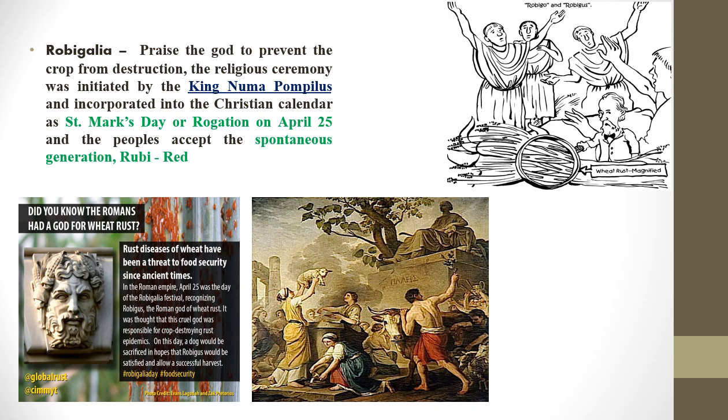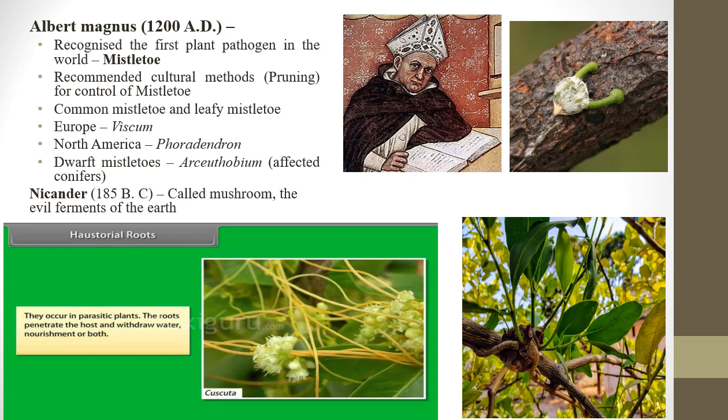Romans used to sacrifice animals like oxen, foxes, and goats during Robigalia to ward off rust disease. People in those times strongly believed in the spontaneous generation theory. Albertus Magnus, a priest rather than a scientist, was the first to recognize the plant disease Mistletoe — the first recognized plant pathogen in the world — and recommended cultural practices like pruning for its control.